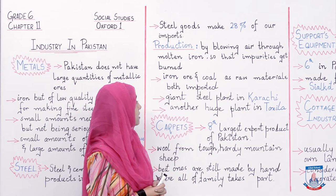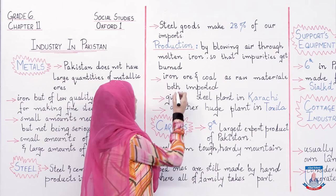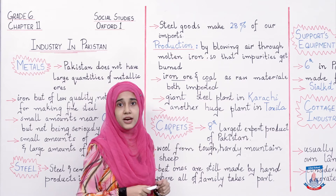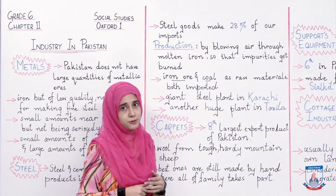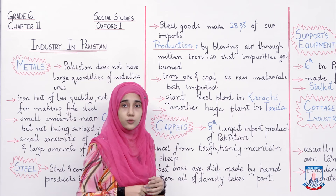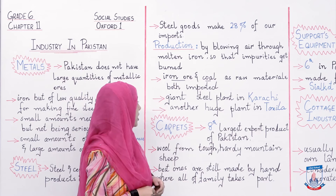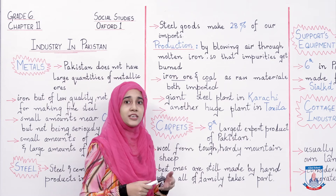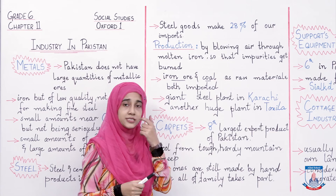Iron ore aur coal steel ke raw materials hain lekin dono hi high quality mein hamare mulk mein available nahi hain. Available hain par low quality mein and they cannot be used in steel production, jiski wajah se hamen iron ore aur coal dono hi import karne padte hain. Karachi mein ek bahut bada steel plant hai, aur usके aas-paas ka kafi area bhi isi cheez ko jaata hai ke steel banne ke baad use different industries ko supply kiya jata hai.